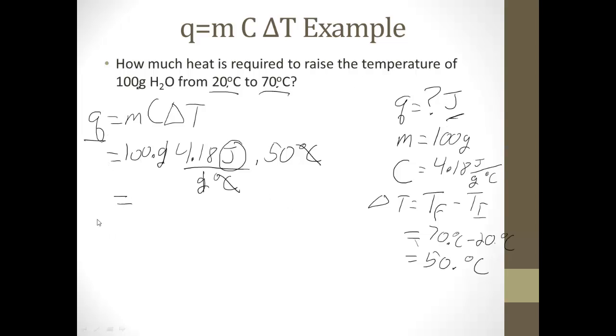Now I'm ready to plug these into my handy-dandy calculator, and I have 100 times 4.18 times 50 is equal to 20,900 joules. Really, I should have only two significant figures. So to do this to a correct number of significant figures, it would be 21,000 joules. That was our example.